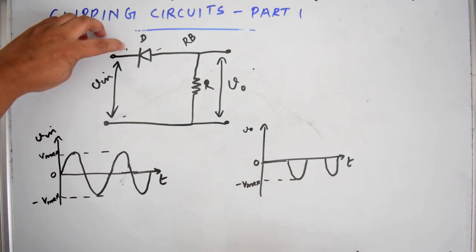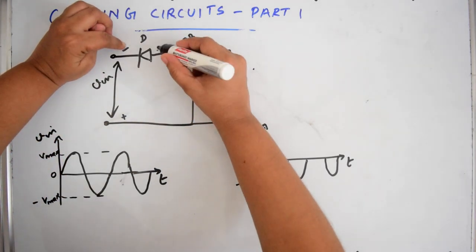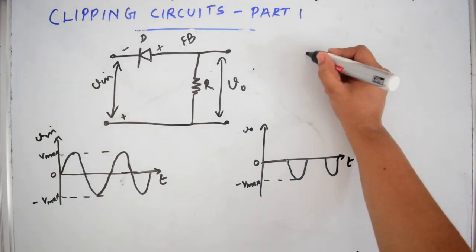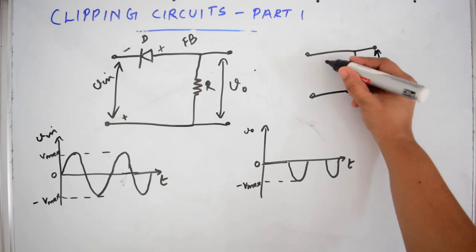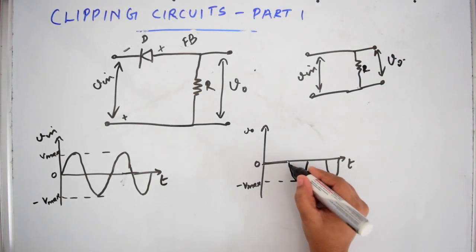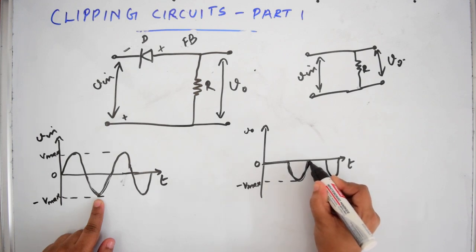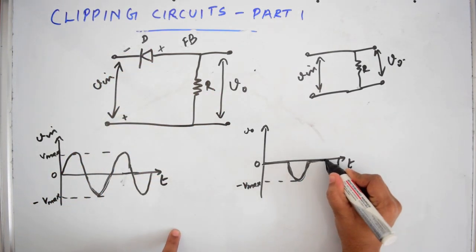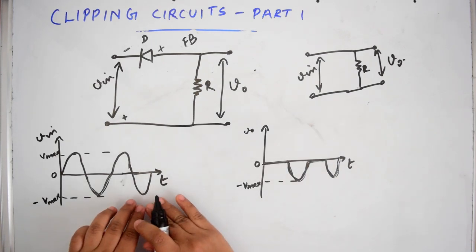Now what happens when the negative half cycle comes? It is negative at one end and positive at the other, so the cathode is negative compared to the anode — the diode will be forward biased and it will conduct. Whatever the input voltage is, that will appear at the output. In the positive half cycle the diode is off and V0 is 0; in the negative half cycle the diode conducts and the output voltage is the same as the input.